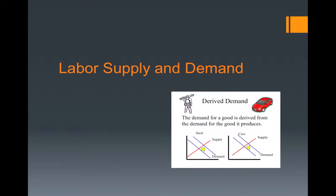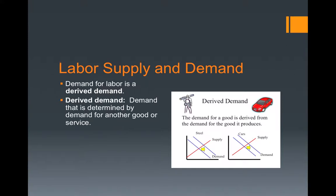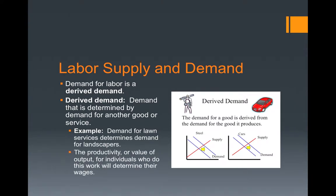The law of supply and demand applies to labor as well as other things. Demand for labor is what is called a derived demand — a demand that is determined by a demand for another good or service. For example, demand for lawn services determines the demand for landscapers. The productivity or value of output for individuals doing this work will determine their wages.